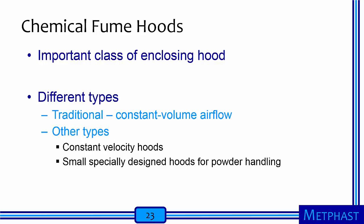Chemical fume hoods are a very important type of enclosing hood, commonly found in industry, research, and academia. There are different types of chemical fume hoods. Traditional fume hoods that use constant volume airflow are the most common. Other types of fume hoods provide constant velocity at the face by variably controlling airflow. Later in this presentation, we will discuss smaller specialty hoods that have become available for powder handling.